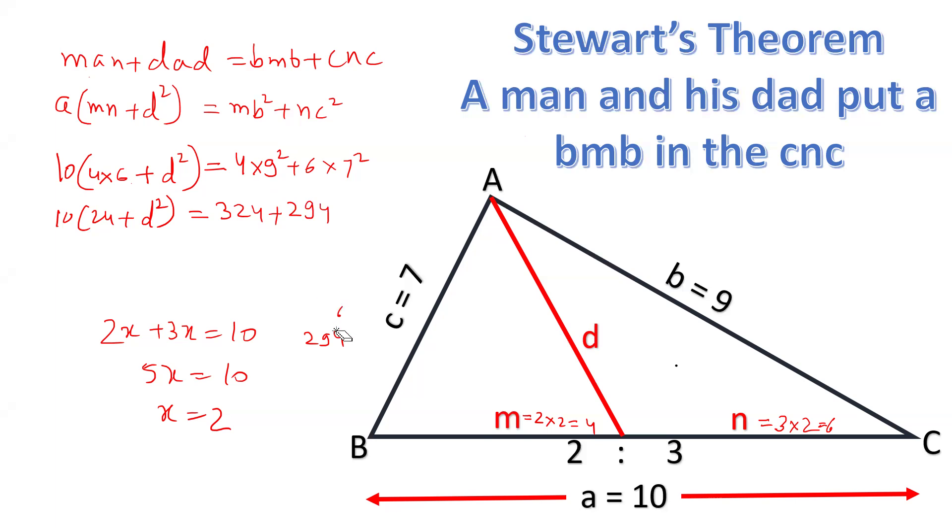Now let us add this number and divide by 10. 324 plus 294 equals 9 plus 11 is 20, 3 plus 6 is 9, carry 2, 5, 618.